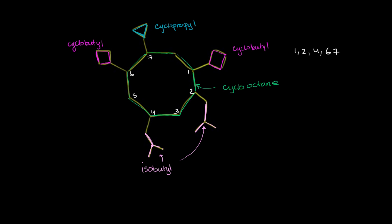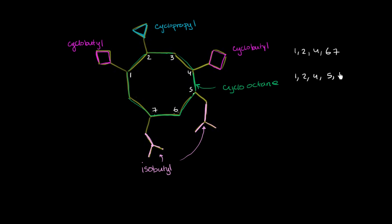The other option is to start at the left cyclobutyl group, make this carbon one, and also go clockwise — two, three, four, five, six, seven. Now groups are attached at positions one, two, four, five, and seven. This second numbering is preferable: both options have groups at one, two, four, and seven, but the second has something at five while the first had something at six. So we use this numbering.